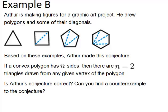Based on these examples, Arthur made this conjecture: If a convex polygon has n sides, then there are n minus two triangles drawn from any given vertex of the polygon. So let's just think about what that means. He's saying if the shape has n sides.